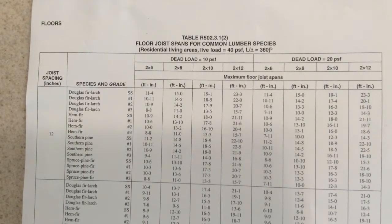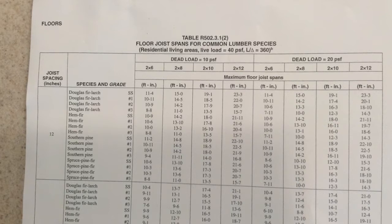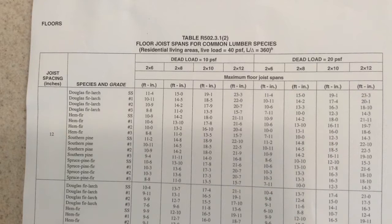The first thing we have to do is distinguish between the two types of loads. Dead load is the weight of the materials of the building that the floor must support. Dead load would include the joists themselves, any sheeting attached to them, walls that are going to sit onto the floor, non-bearing partition walls, and the sheetrock on the walls.